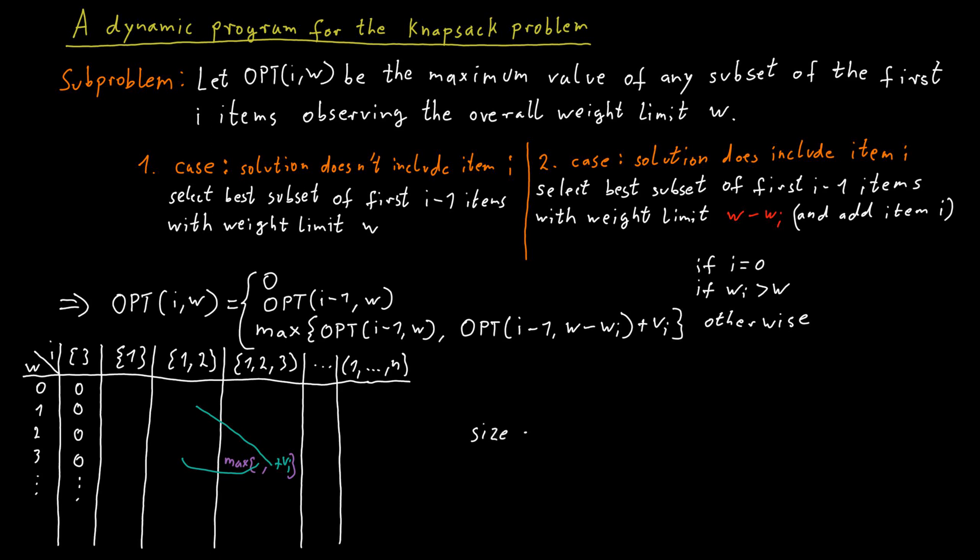And we know what the size of the table is. The number of columns in the table is in the order of n, the number of items. And the number of rows in the table, well, that's a number of different weight limits we look at.